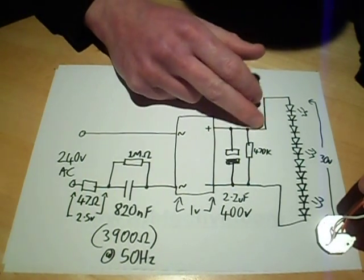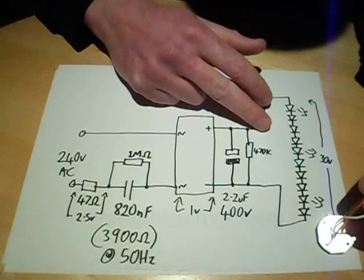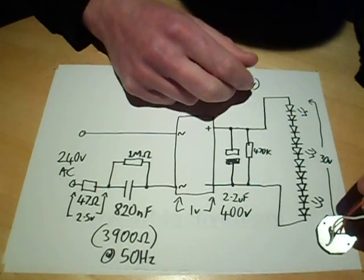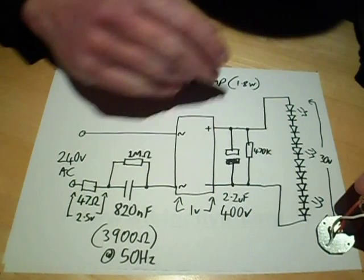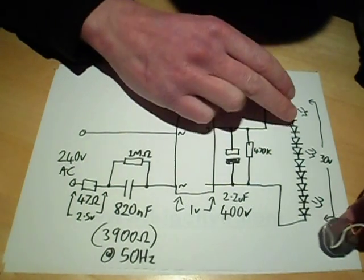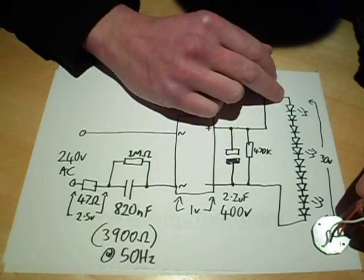there'd be a resistor in the output as well to try and limit the ripple a wee bit. But in this case, it must just be relying on the fact there is a slight knee voltage with the gallium nitride LEDs.